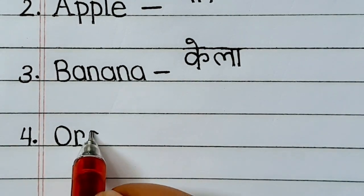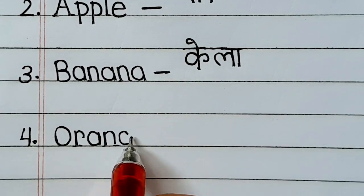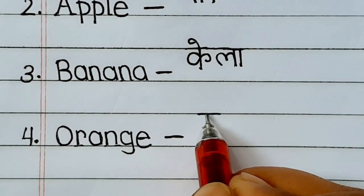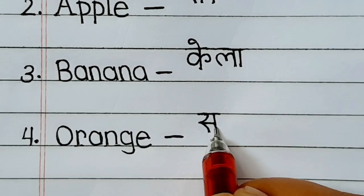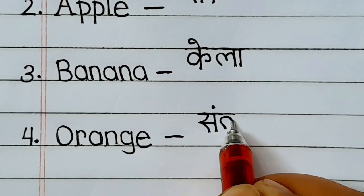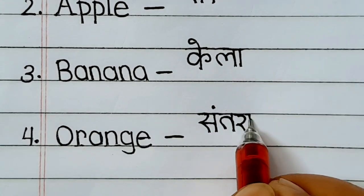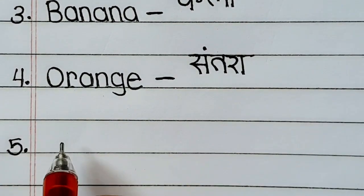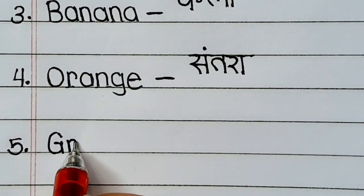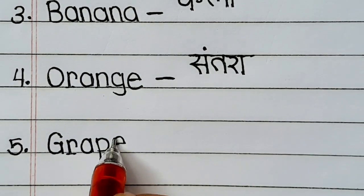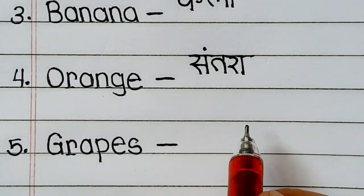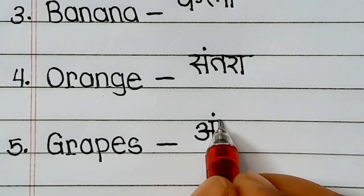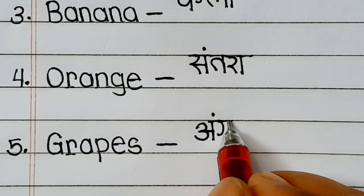O-R-A-N-G-E, orange means sanktara. G-R-A-P-E-S, grapes means angur.